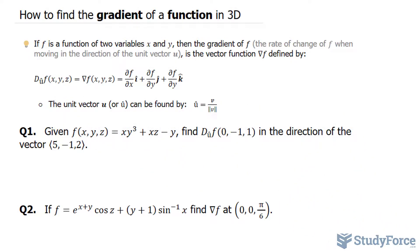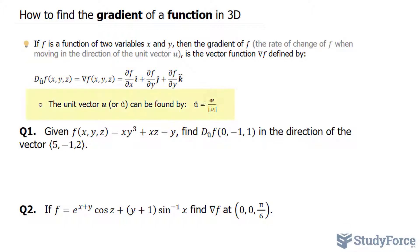In this lesson, I'll show you three examples on how to find the gradient of a function in 3D. To find the gradient of a function in 3D, we first have to find the gradient of the function evaluated at the point that they give us. Then we multiply it by the unit vector, which can be found using this formula, where you have your vector and you divide it by its magnitude.